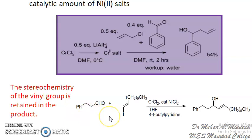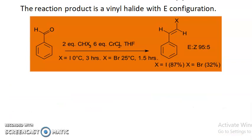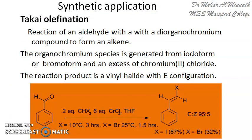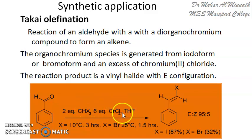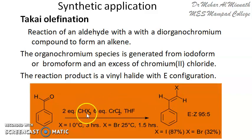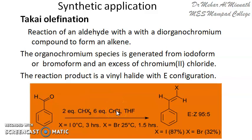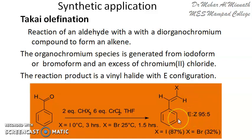One more reaction is the Takai olefination. In this reaction an aldehyde reacts with iodoform, bromoform, or a haloform in the presence of a chromium compound to give an alkene. The organochromium complex is generated from the haloform and chromium chloride. This then reacts with the aldehyde to give a vinyl halide with E-configuration — 95% E-selectivity is obtained.